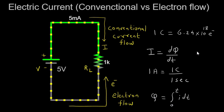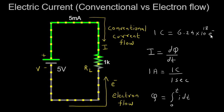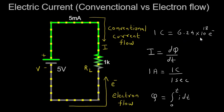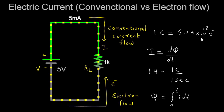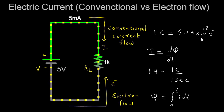Lastly, it is important to establish a relationship between coulombs, the unit of charge, and electrons, the charged particles involved in the flow of electric current. One coulomb of charge is equivalent to 6.24 × 10^18 electrons. This conversion factor allows us to comprehend the immense number of electrons involved in even the smallest amounts of charge. It highlights the tiny but incredibly numerous carriers of charge within a conductor.